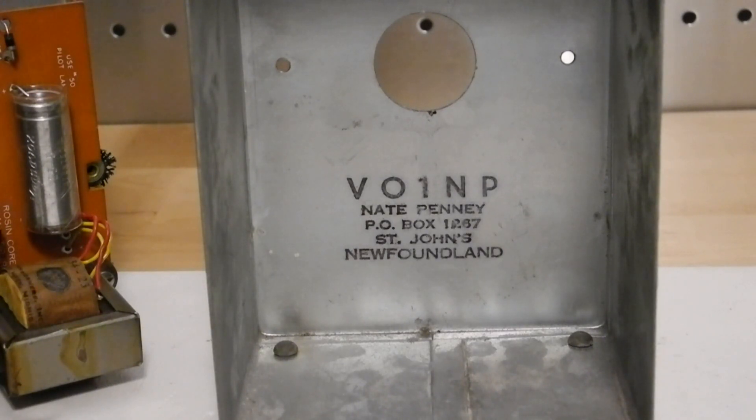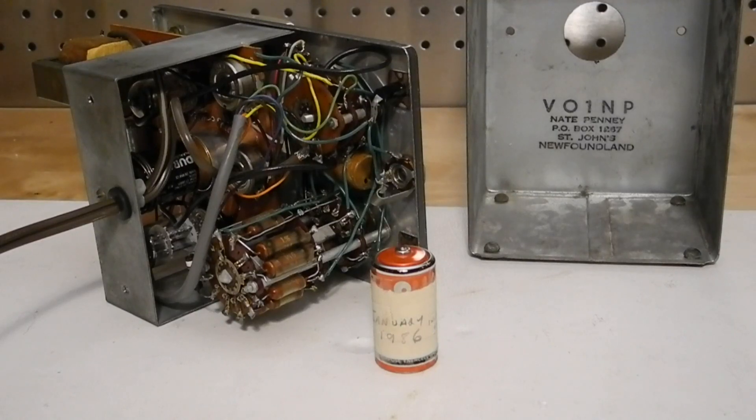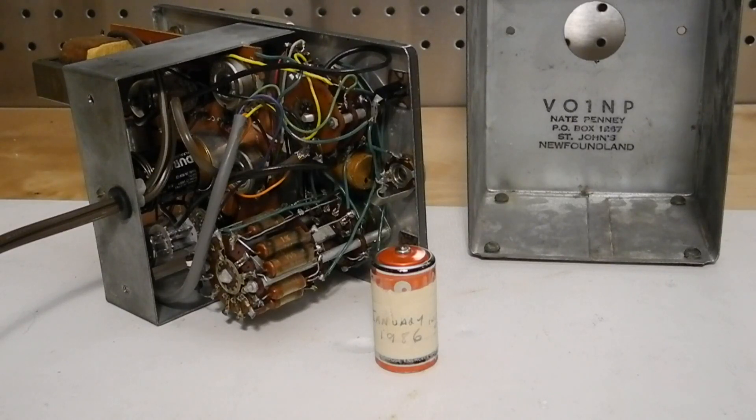I can only assume his equipment got sold off on eBay or some other source and somehow made its way to the seller here in Ottawa, Canada who gave it to me. The kit was well-built and it even contained a battery marked New, January 1986, installed June 9th, 1986. So Nathan was quite conscientious.